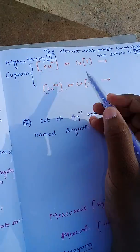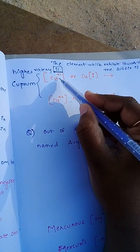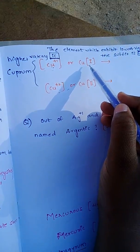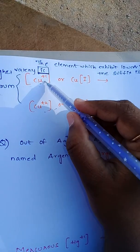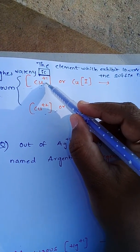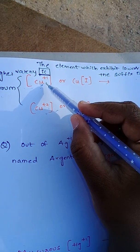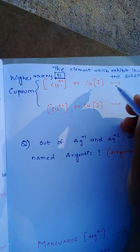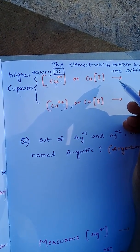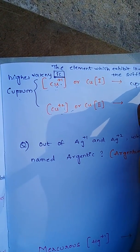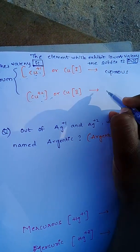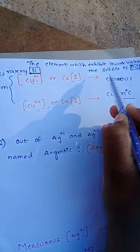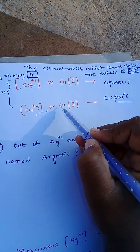Copper's Latin name is Cuprum. Copper exhibits plus one oxidation state and plus two oxidation state, also written in Roman numerals. Plus one is the lower valency, so the suffix is -ous, giving the name Cuprous. Plus two is the higher valency, so the suffix is -ic, giving the name Cupric.